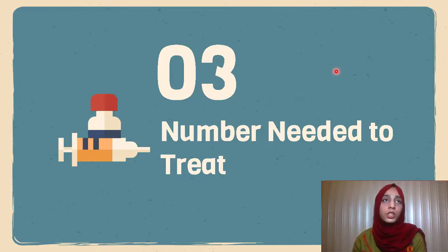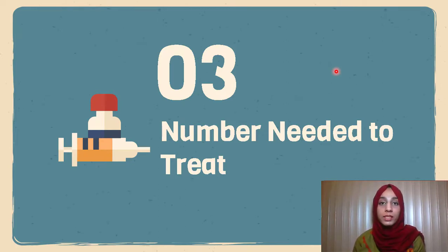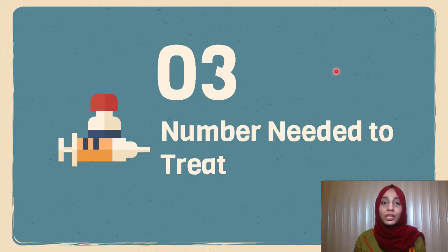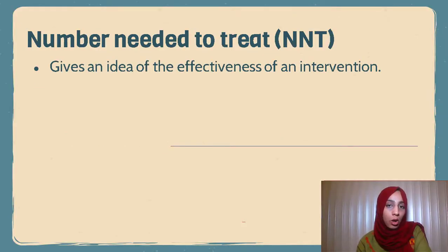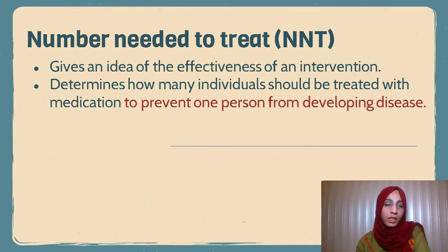Now we're going to talk about number needed to treat. Whenever there is an intervention in the real world — it can be a drug, a diet, or a procedure — things are not always black and white. In that case, the exposure is the treatment itself, and the disease status is the outcome of that intervention. Number needed to treat gives an idea of the effectiveness of that intervention. It determines how many individuals should be treated to prevent one person from developing the disease.